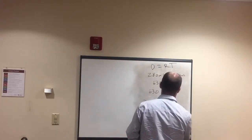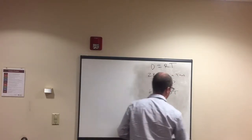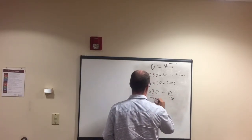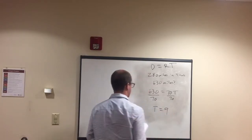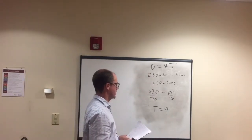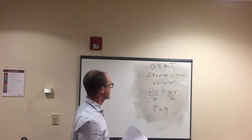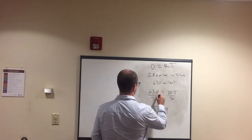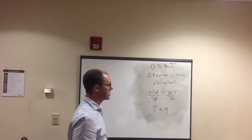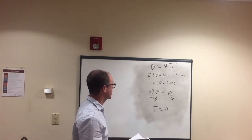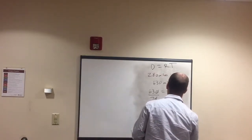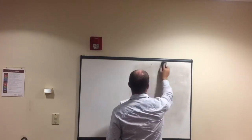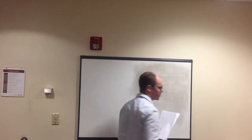We divide each side by 70. Time equals 9 hours. If you have a zero in the numerator and denominator you can cancel them, leaving 63 divided by 7, which equals 9. So our answer is 9 hours. You will see distance equals rate times time questions on the test.